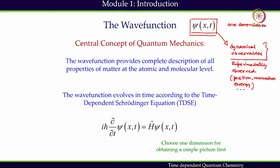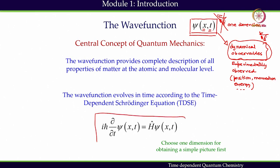Now this wave function can be connected to the dynamical observable. We cannot observe the wave function directly — this is something which we will always remember in this class. The wave function has to be converted in a certain way to connect to a dynamical observable. The wave function, which is a function of position and time, evolves in time according to the Time-Dependent Schrödinger equation — one dimensional, often abbreviated as TDSE.